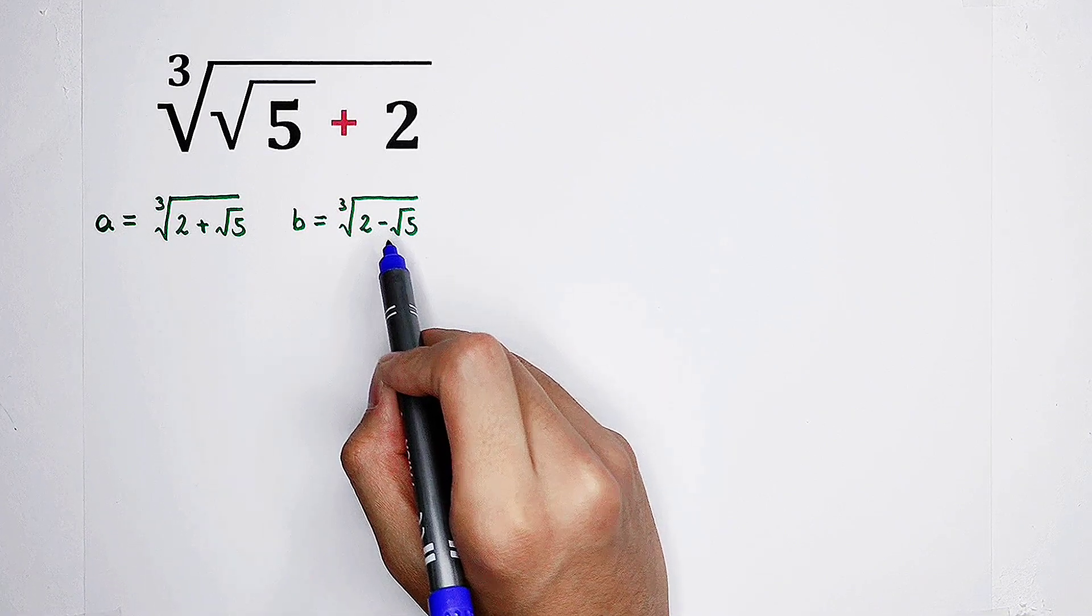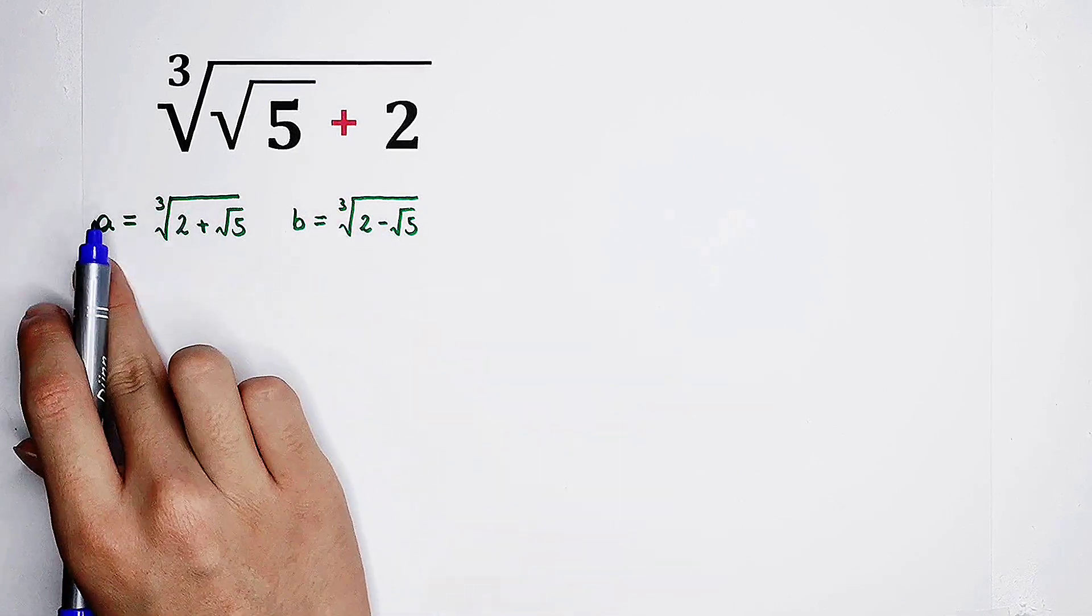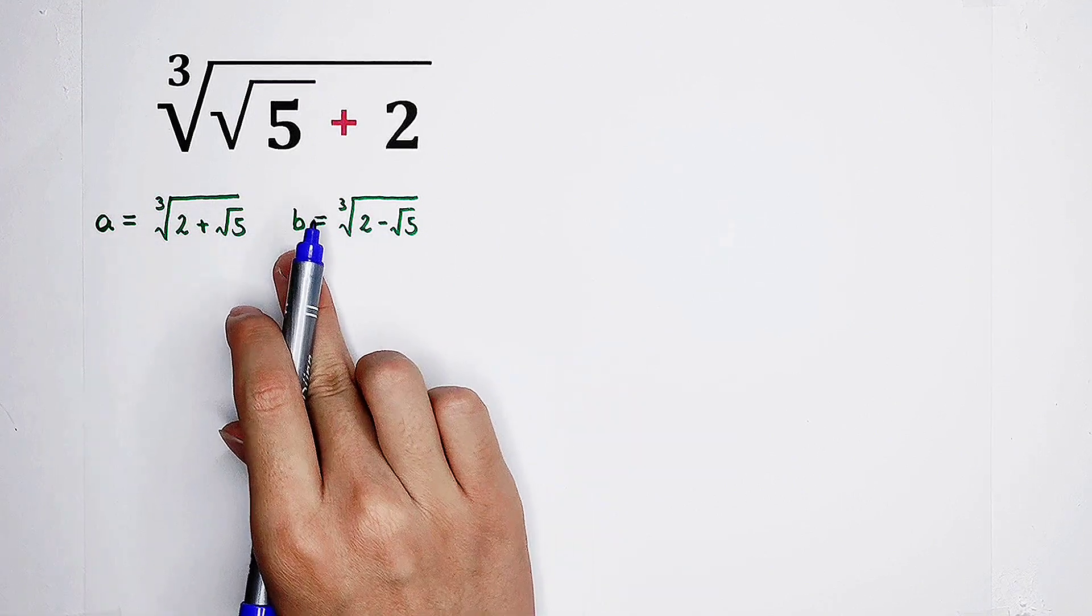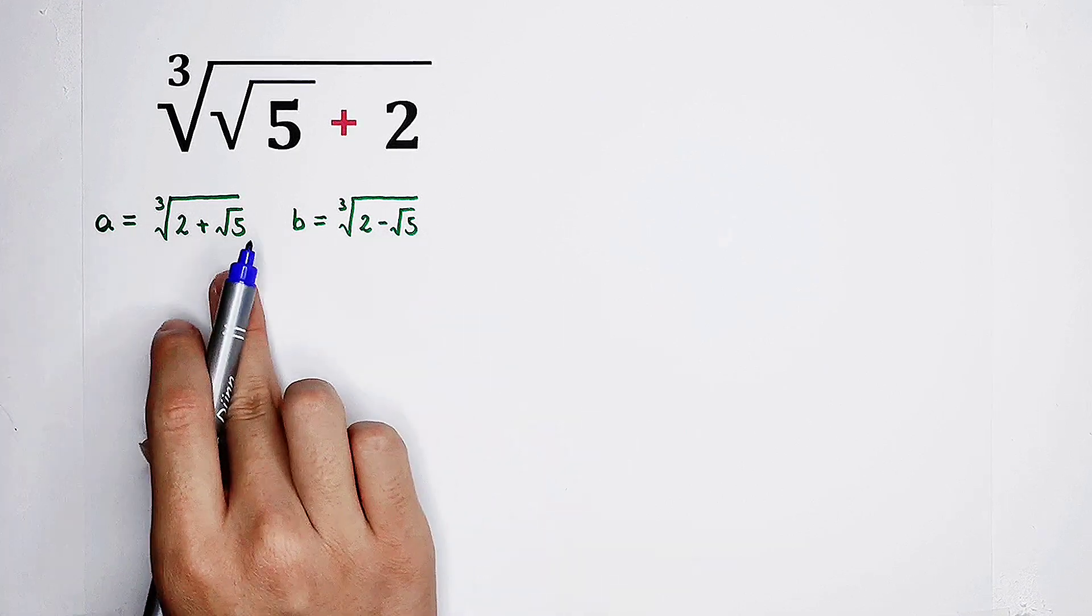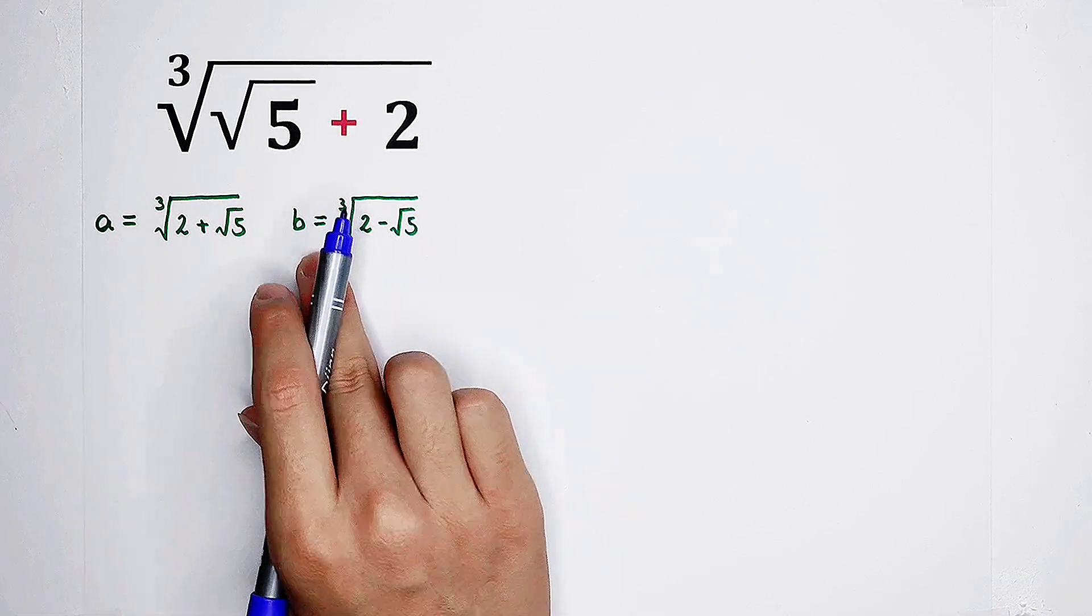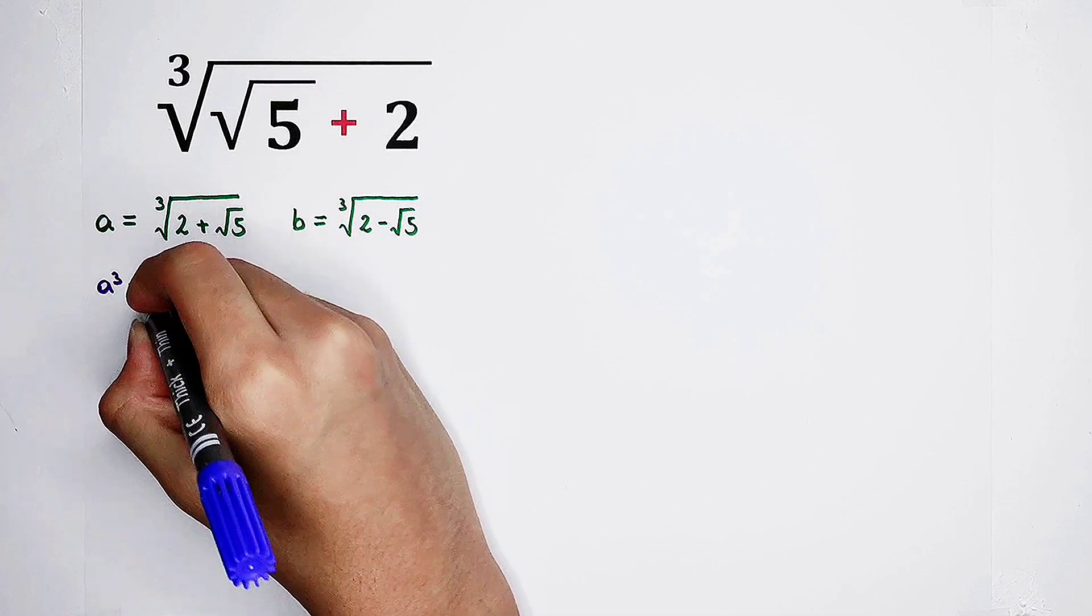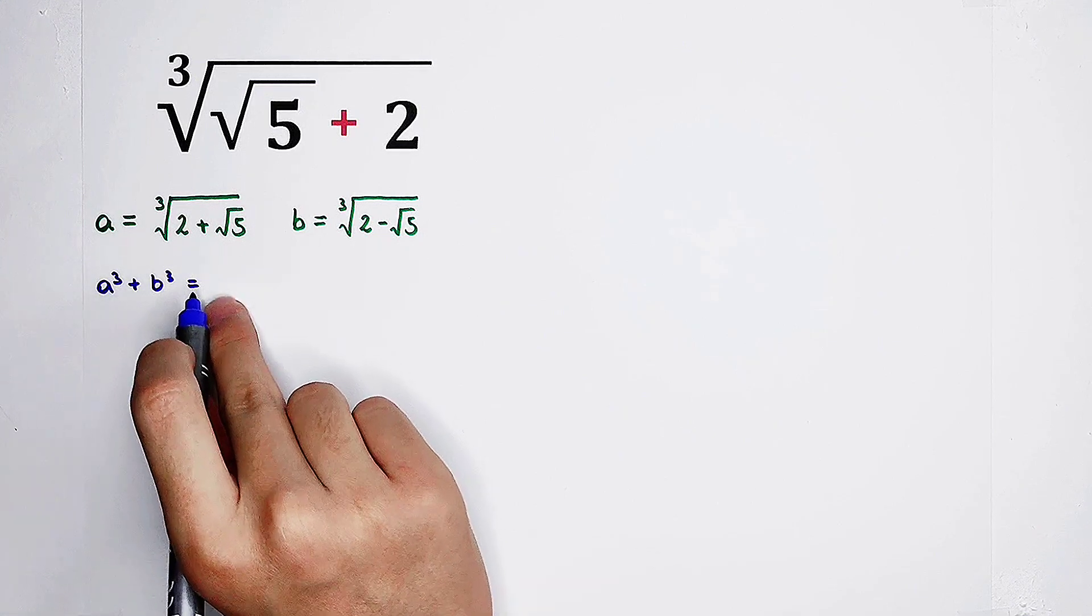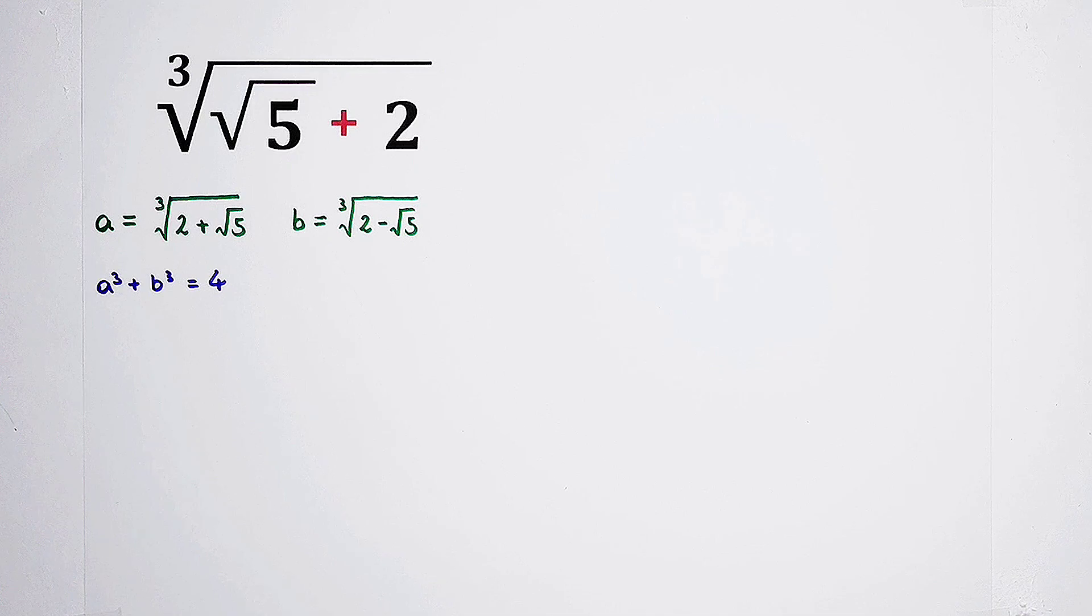In these two equations, for example, in our first equation, a cubed is 2 plus square root of 5. For our second equation, b cubed is 2 minus square root of 5. And you can see, there is a plus square root of 5 in a cubed and a minus square root of 5 in b cubed. So if we add a cubed to b cubed, then the right-hand side will be 2 plus 2, which is equal to 4.